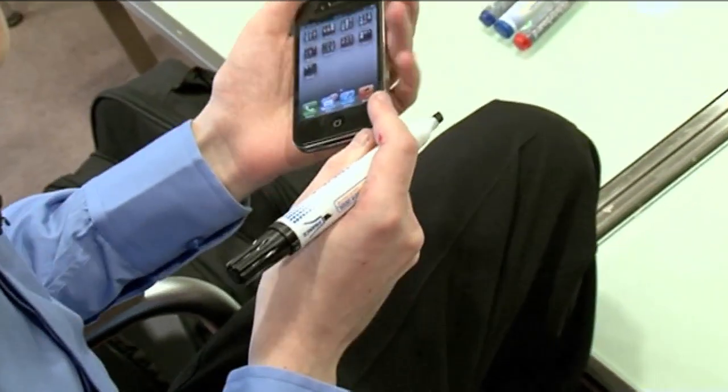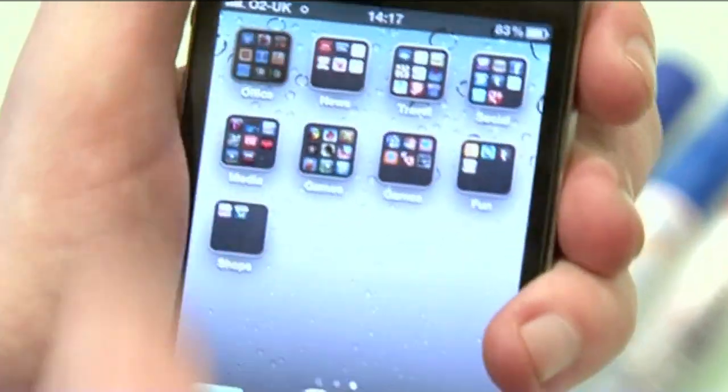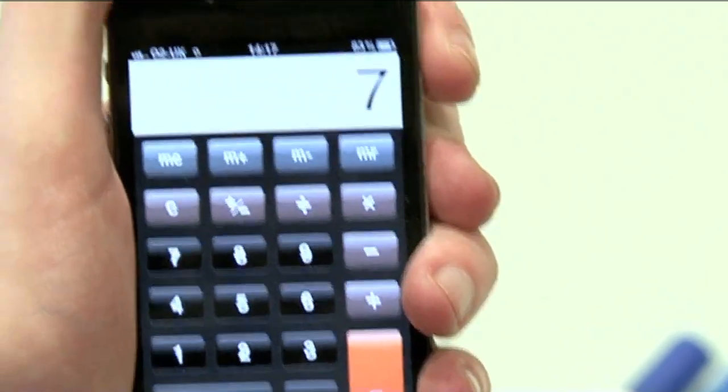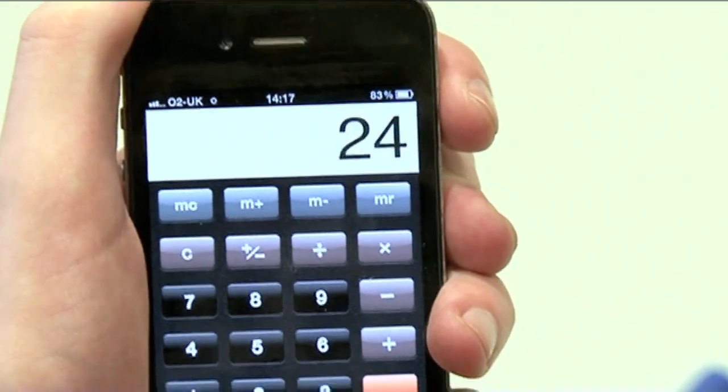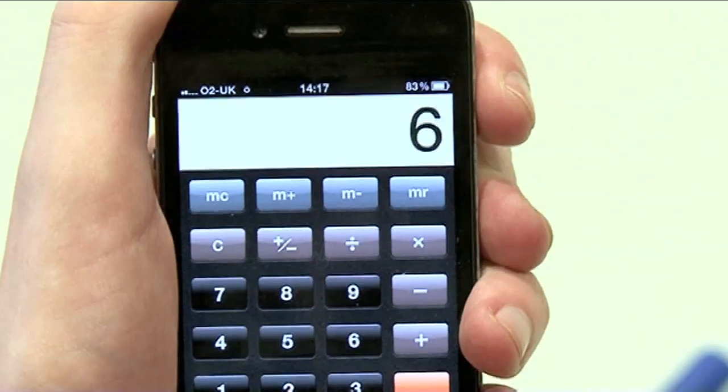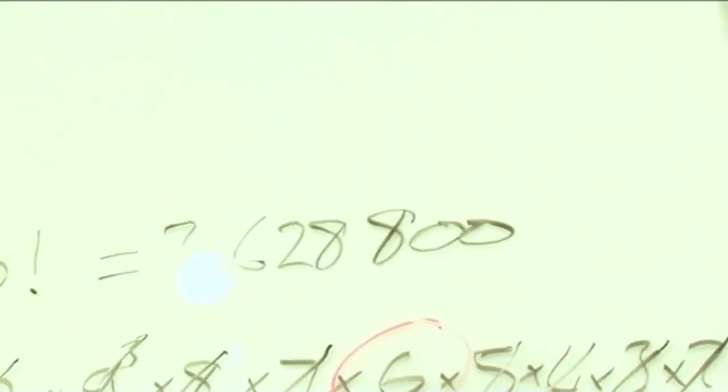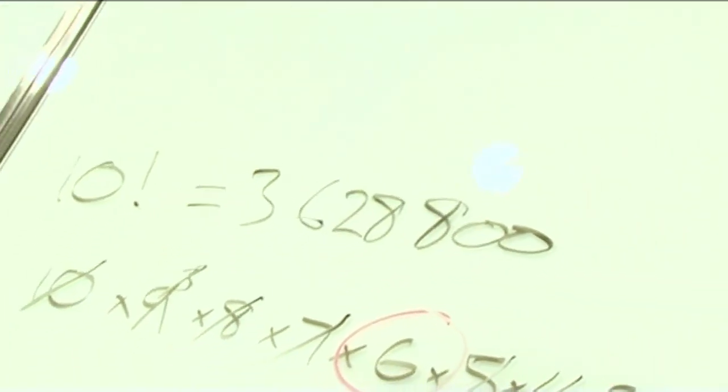Now we get our calculator. Let's see if we do get what I said it was going to be. 6 weeks times 7 days times 24 hours times 60 minutes times 60 seconds is exactly what I said before, 3,628,800. Or to put it another way, 10 factorial.